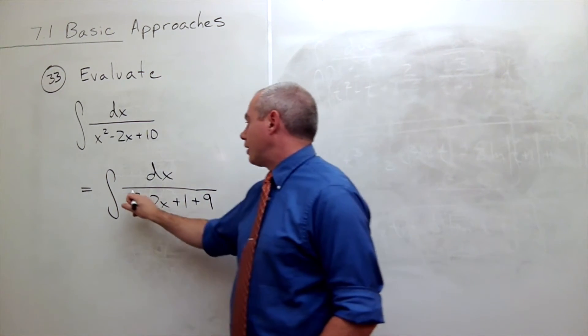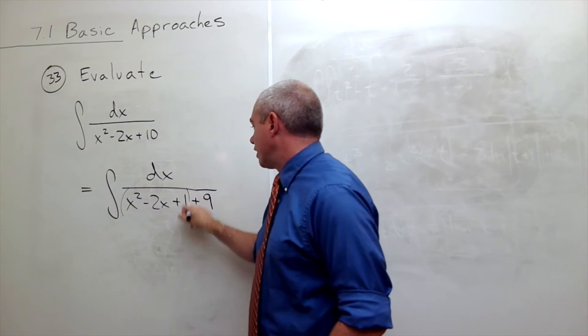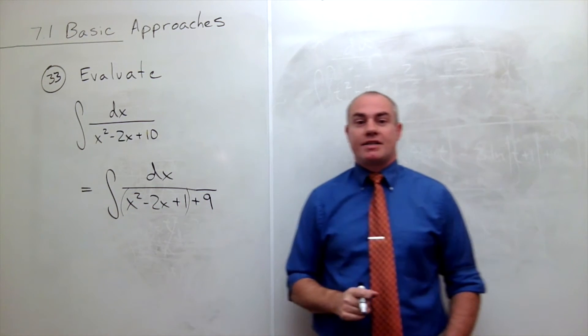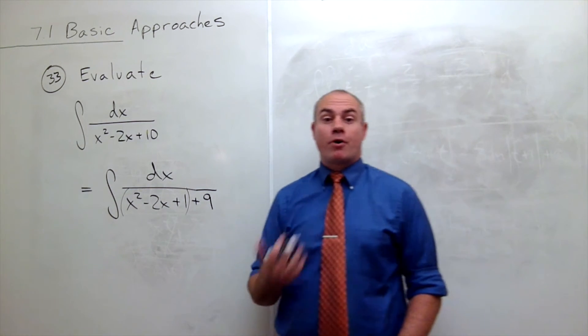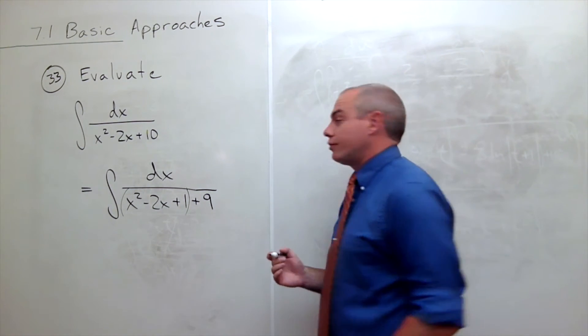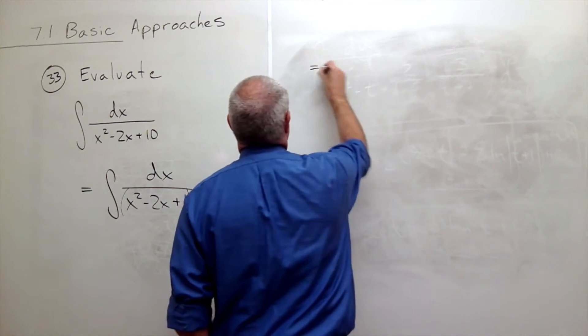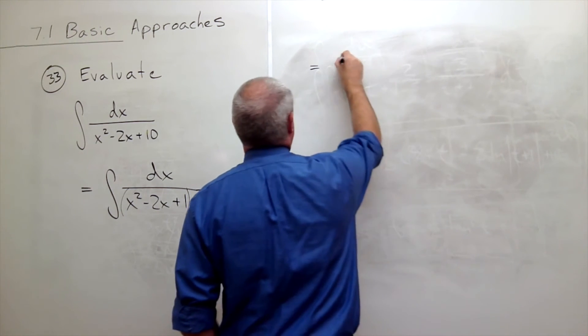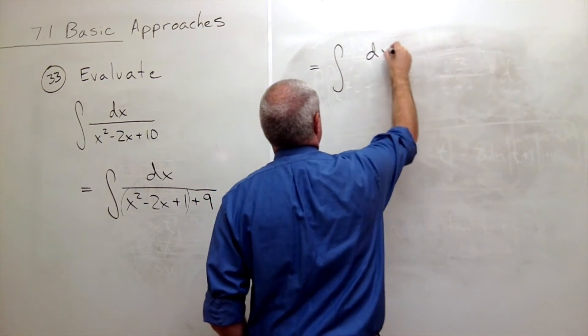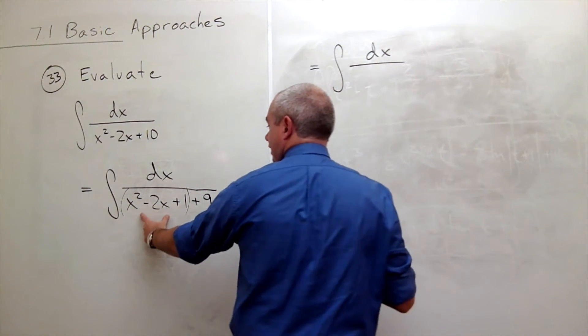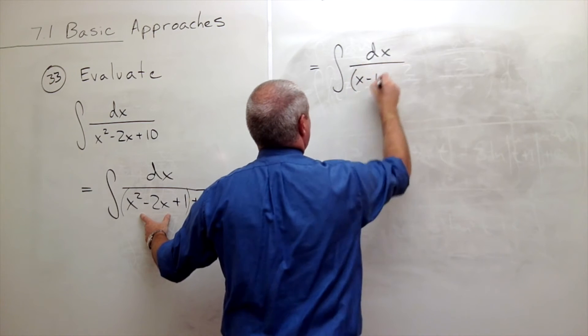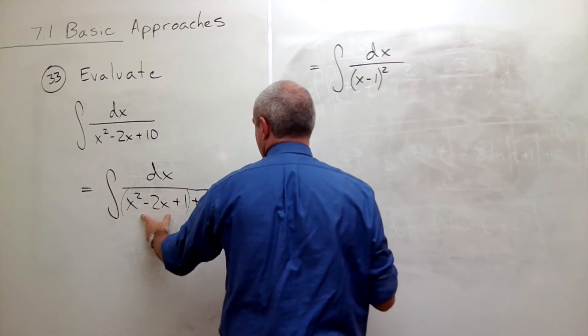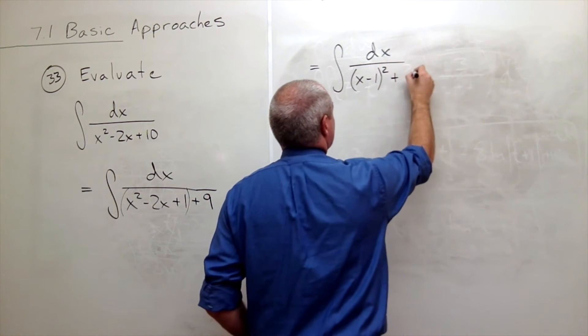But now look at what we've got right here. That factors nicely. x squared minus 2x plus 1, that's a perfect square. So I could rewrite that as the integral of dx over, well this guy is a perfect square, that's x minus 1 quantity squared, and then I've got plus 9.